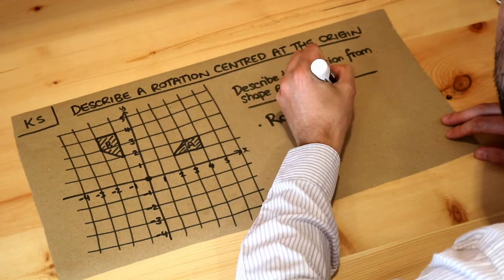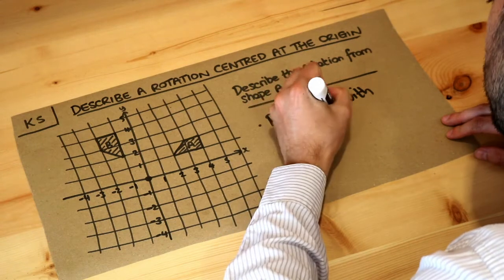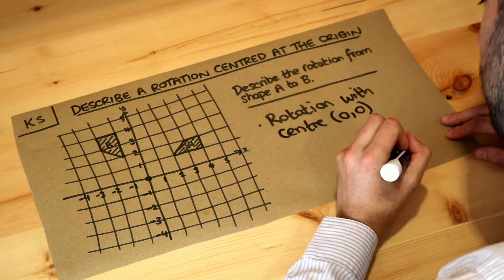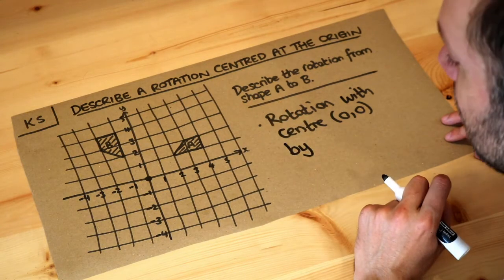So we could say a rotation with center (0,0) or the origin, and then we need to say what angle it's rotating by.